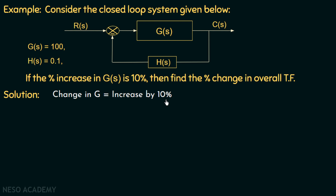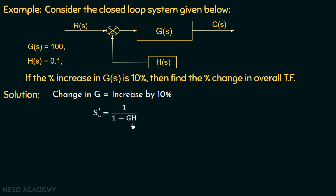Moving on to the solution — the change in G given in the example is an increase of 10%, and we are asked to find the percentage change in the overall transfer function. For that, firstly we will find the sensitivity of the transfer function with respect to gain, which is equal to 1 over (1 + GH). We have derived this expression in the previous lecture.